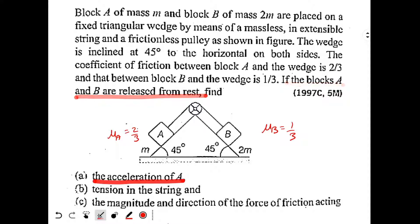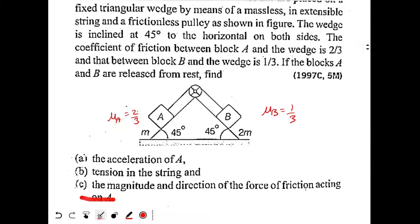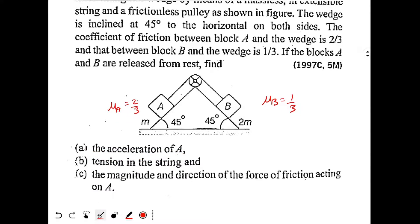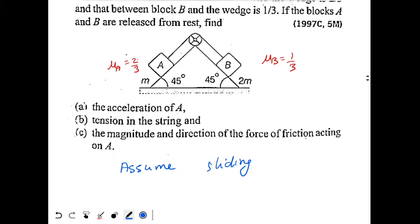The question asks us to find the acceleration of A, the tension in the string, and the magnitude and direction of friction acting on A. Whenever you have a problem with friction and you don't know whether it will be static or kinetic, you must assume something and solve. So let's start with the assumption: assume sliding — meaning friction is kinetic.